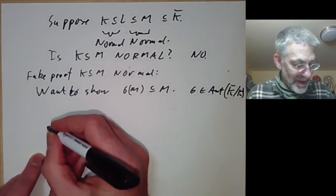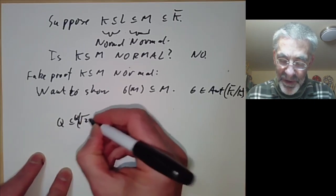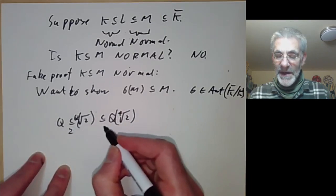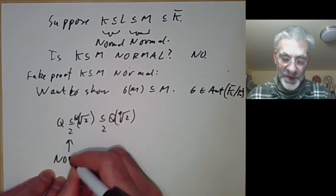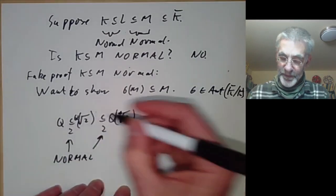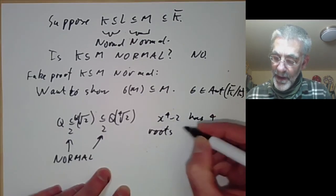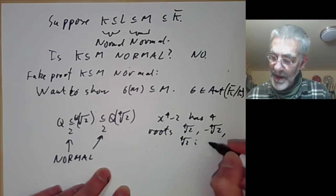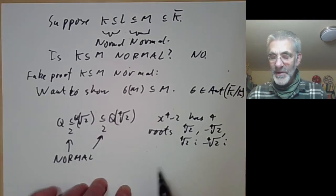The counterexample is Q ⊂ Q(√2) ⊂ Q(∜2). This extension Q(√2) over Q has degree 2, and Q(∜2) over Q(√2) also has degree 2. All degree-2 extensions are normal, so both of these are normal. But the extension Q ⊂ Q(∜2) is not normal, because x⁴ − 2 has four roots: ∜2, −∜2, ∜2·i, and ∜2·(−i). The last two are non-real and so obviously not in the field generated by ∜2.